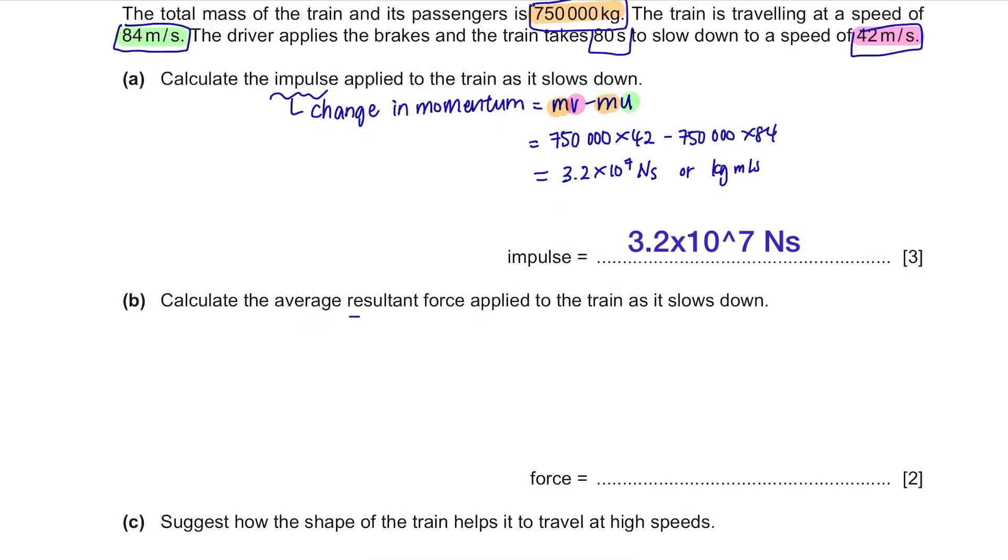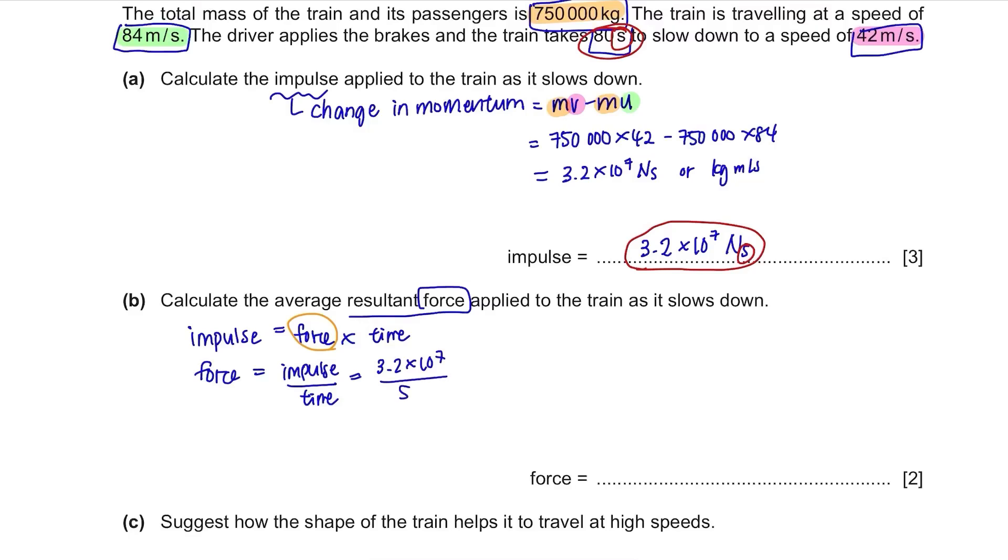Part B. Calculate the average resultant force applied to the train as it slows down. We just found the impulse and one other formula related to impulse is impulse equals to force multiplied by time. Since we need to find the force, rearrange the equation, impulse divided by time. Impulse was 3.2 times 10 to the power of 7 and time is given here, 80 seconds. Check their units, both are in seconds. The answer is 3.9 times 10 to the power of 5 newtons because it's a force.